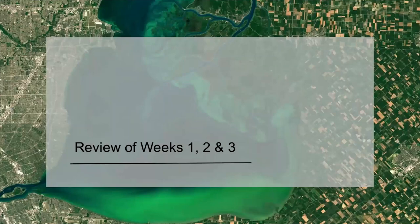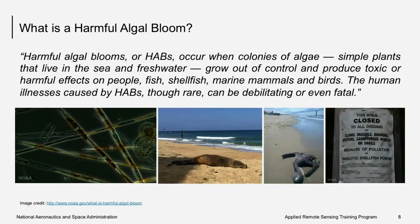In week one, we provided a description for what is a harmful algal bloom. Harmful algal blooms, or HABs, occur when colonies of algae — simple plants that live in the sea and fresh water — grow out of control and produce toxic or harmful effects on people, fish, shellfish, marine mammals, and birds. The human illnesses caused by HABs, though rare, can be debilitating or even fatal.